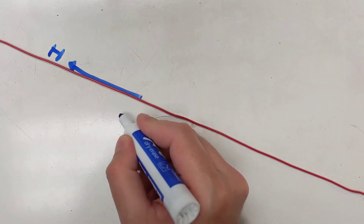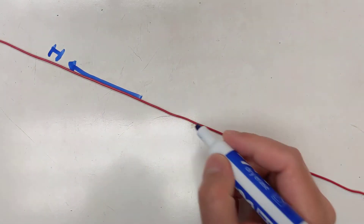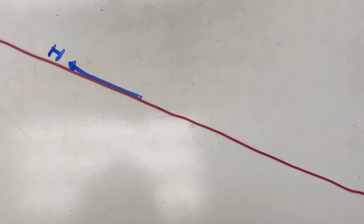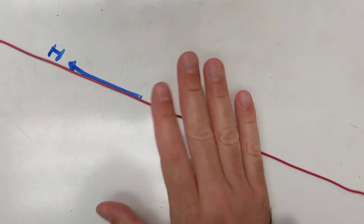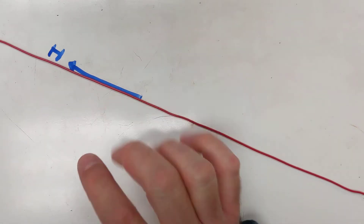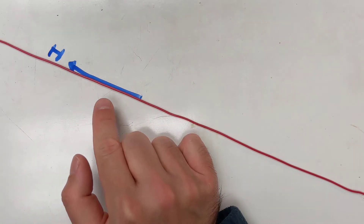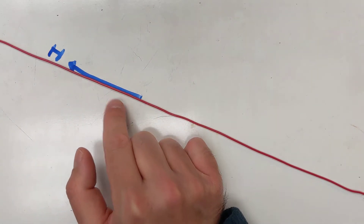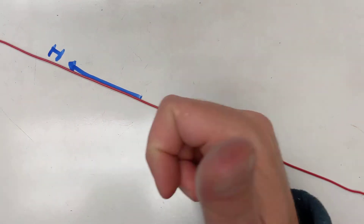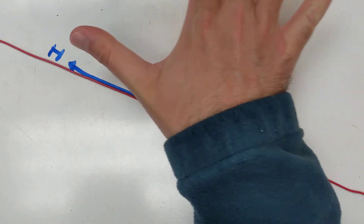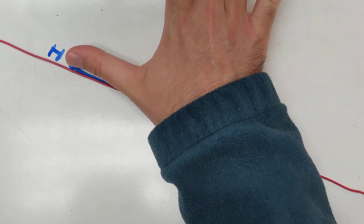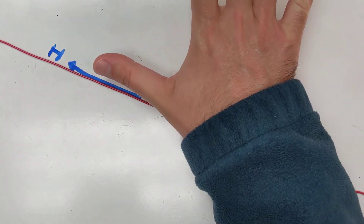Electrons are moving the opposite way of course. The right-hand rule that you can use to find the direction of the magnetic field created by this current — you start with your thumb and place your thumb in the direction of the conventional current.